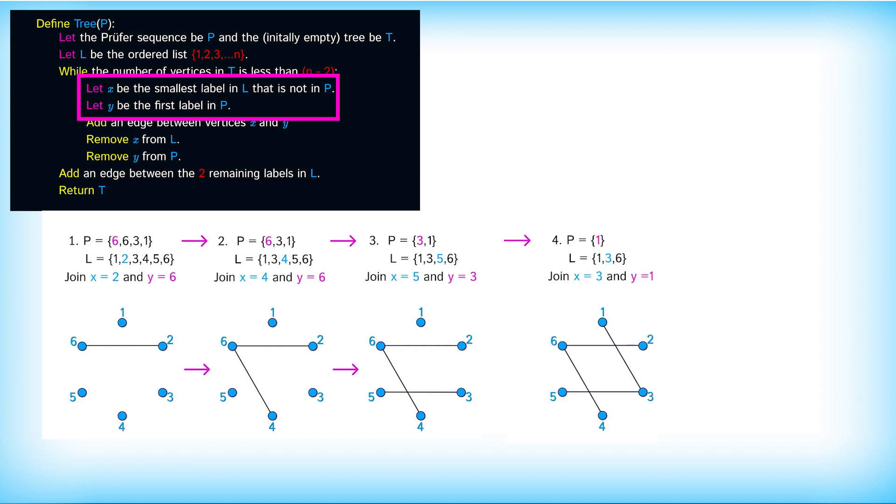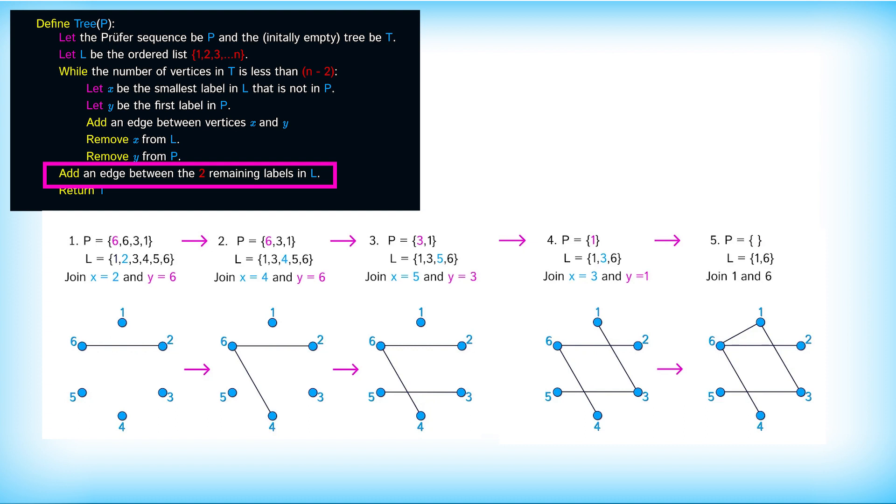Going again we join 5 and 3. Then we join 3 and 1 and at this stage we only have two numbers left in l. We join these with an edge, that is 1 and 6, and that gives us our tree. This is the tree that corresponds to our proof of sequence and it is the tree which we started with.